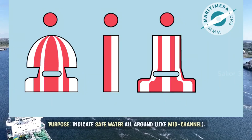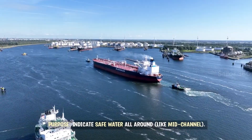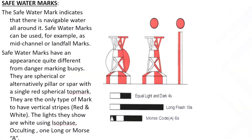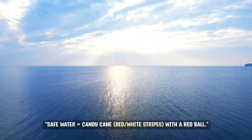Safe water buoys. Purpose: indicate safe water all around, like mid-channel. Features: red and white vertical stripes. Top mark: single red sphere. White light, if lit, showing a single long flash, Morse code A, or isophase light. Trick to remember: safe water equals candy cane — red and white stripes with a red ball.